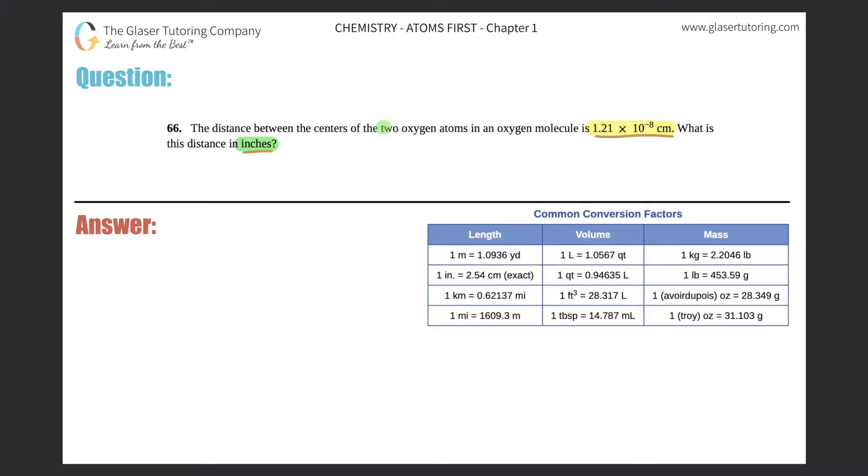They're talking about two oxygen atoms in an oxygen molecule. So an oxygen molecule is O2, hence the two oxygen atoms. So let's just say here's one oxygen and here's another. They're saying the distance between the centers, so the center of one oxygen to the center of the other oxygen is 1.21 times 10 to the negative 8 centimeters. And they want to know what that distance is in inches.